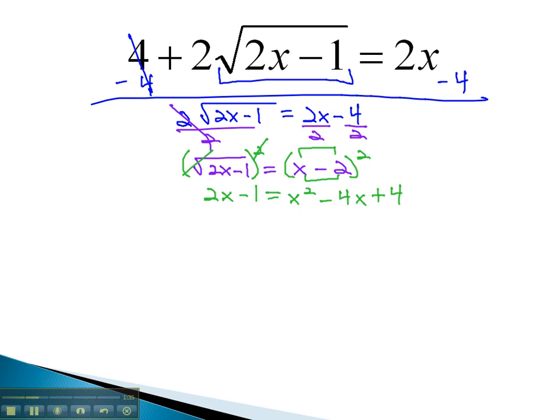Again, when we have an x squared, we need to make it equal to 0 and factor the equation. As x squared is always positive, we subtract 2x and add 1 to both sides. To get our final equation, 0 equals x squared minus 6x plus 5.